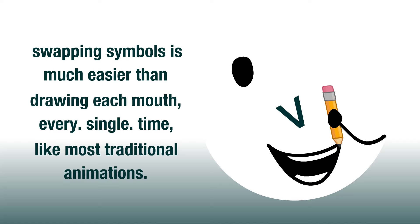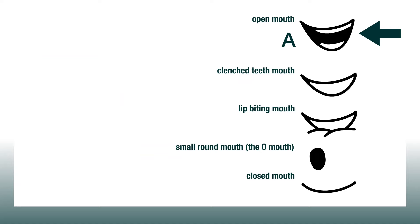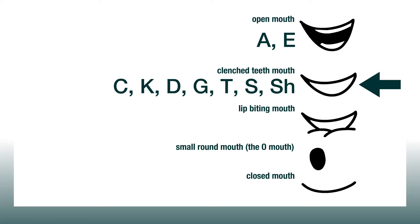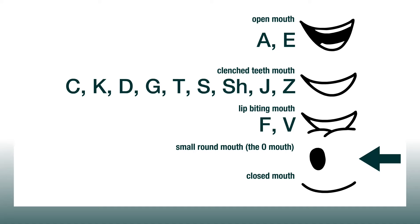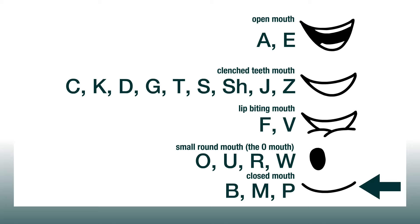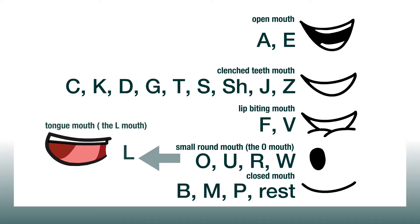I use an open mouth for sounds like 'ah' and 'he'. A clenched teeth-like mouth for sounds like 'cut', 'jut', 'gut', 'shut', and similar sounds. A lip-biting mouth for sounds like 'f' and 'v'. A small round mouth for sounds like 'oh', 'ooh', 'ur', and 'what'. And a closed mouth for sounds like 'b', 'm', 'p', and as a resting position. Some animations may include an extra L mouth, but I personally don't — you can if you want, though.